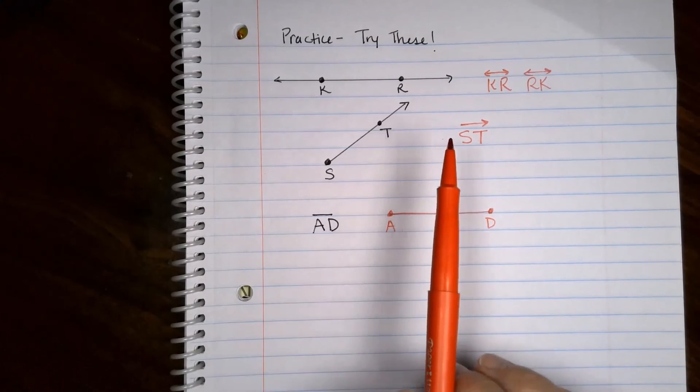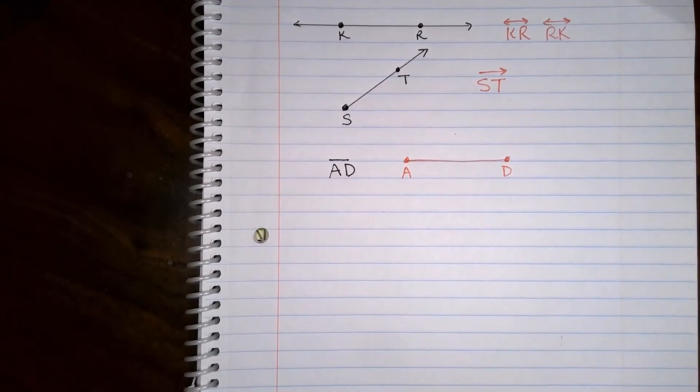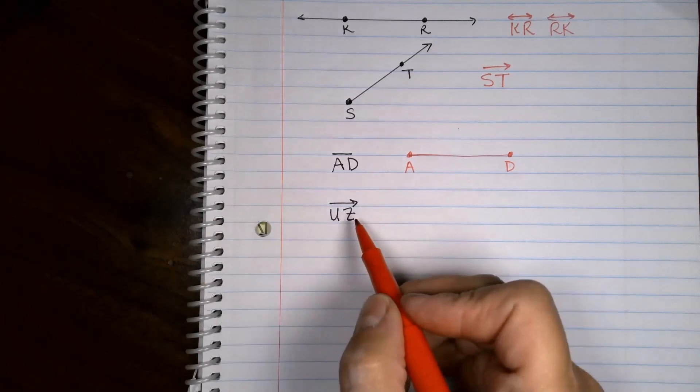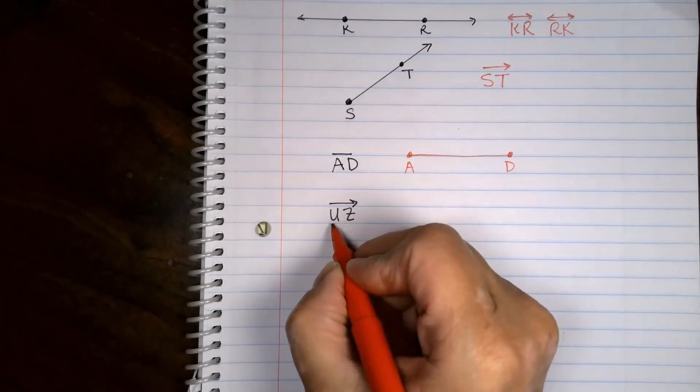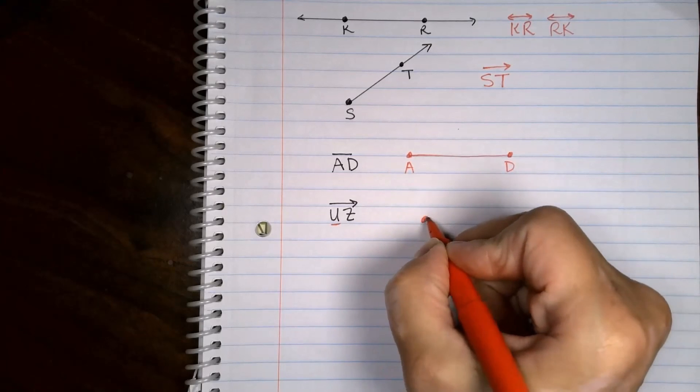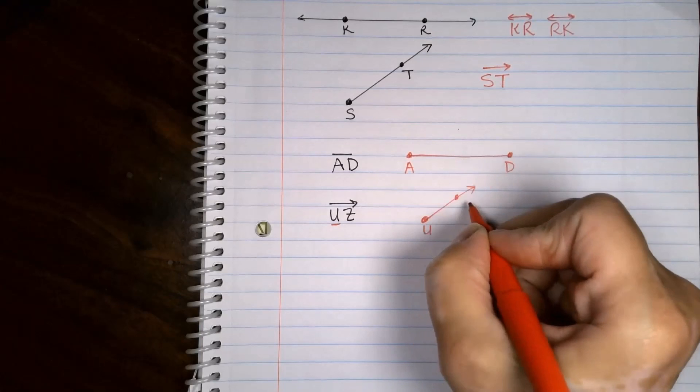I'll give you another name and I'm going to ask you to draw it. Draw that thing. Here comes the answer. Pause if you're not ready. That is a ray and the starting initial point is U. So the U must be here and the Z is on that.